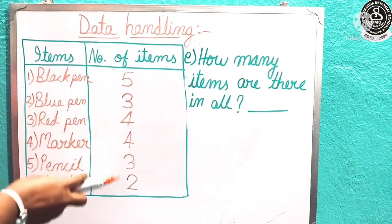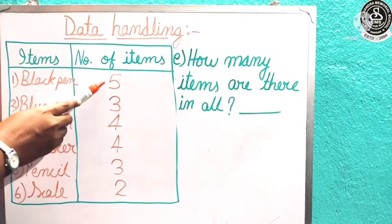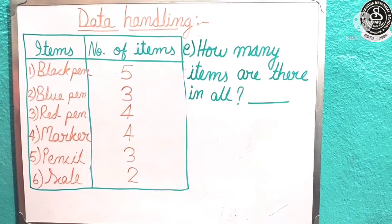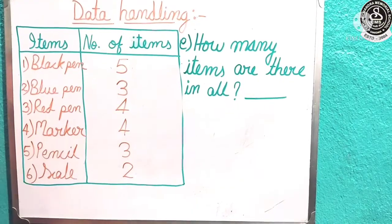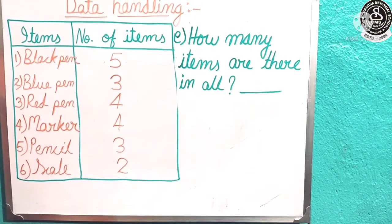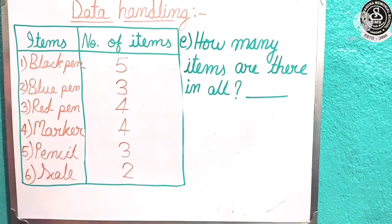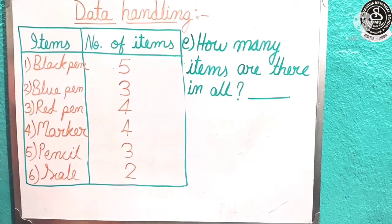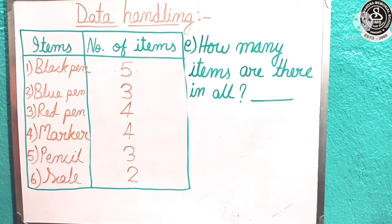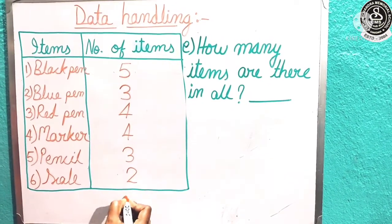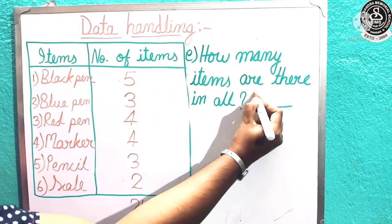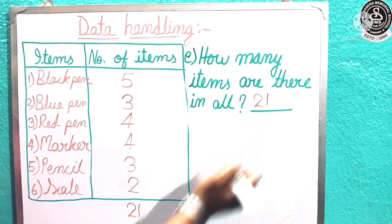We will count on fingers. 5 plus 3, tell me: 8. 8 plus 4: 12. 12 plus 4: 16. 16 plus 3: 19. 19 plus 2: 21. You can write the total here also, and here we have to write the answer. What is the answer? The answer is 21.